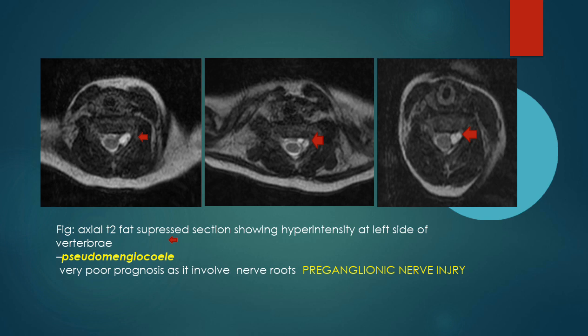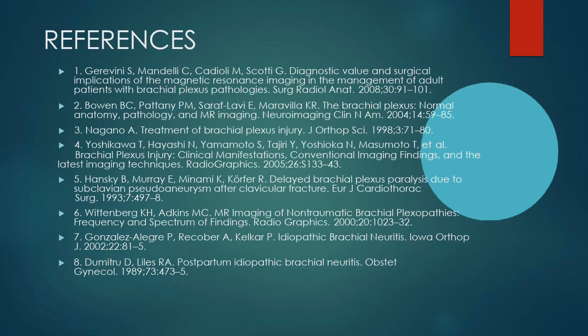As conclusion, MRI — apart from diagnosis — is able to localize whether it is a preganglionic injury or postganglionic injury, which determines the prognosis and management. Preganglionic injuries involve the central nervous system which has no regeneration potential, so prognosis is very poor. These are my references.